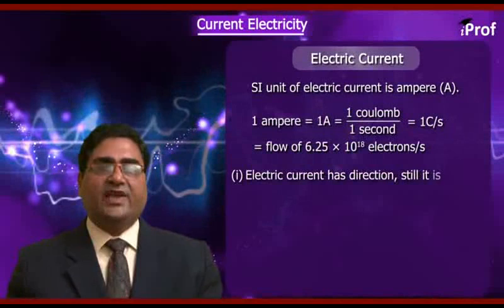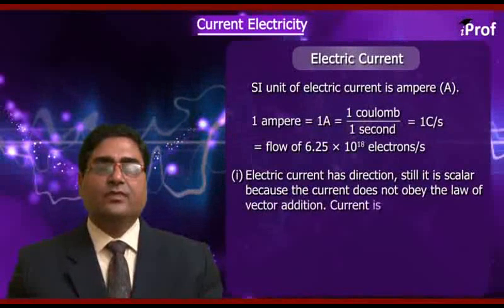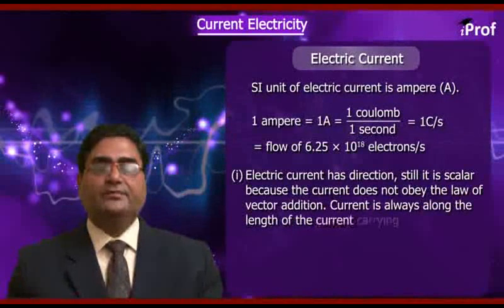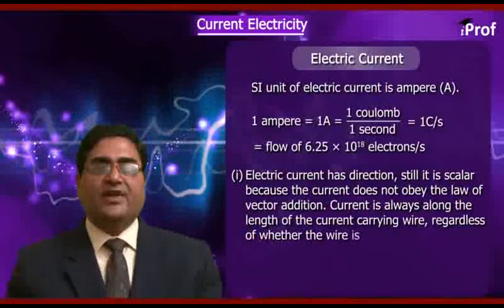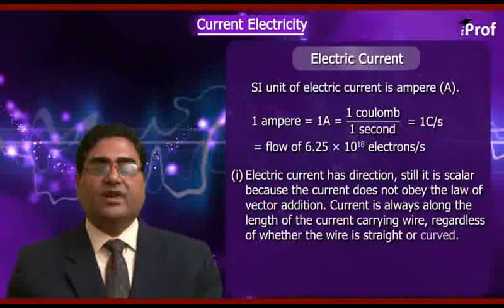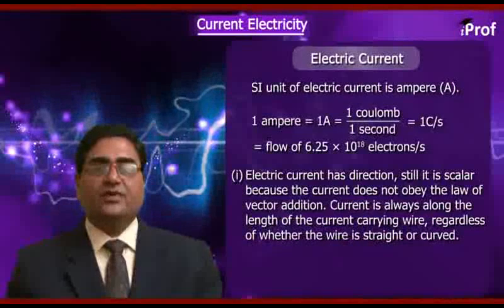First, electric current has direction, yet it is still a scalar because current does not obey the law of vector addition. Current is always along the length of the current-carrying wire, regardless of whether the wire is straight or curved.